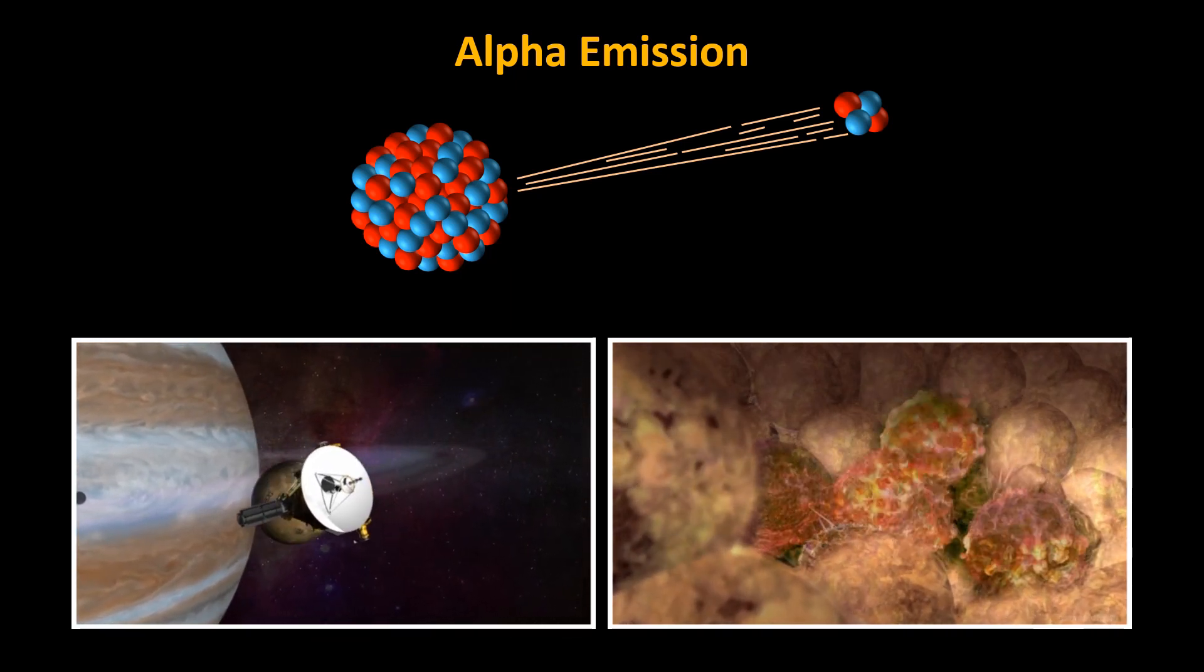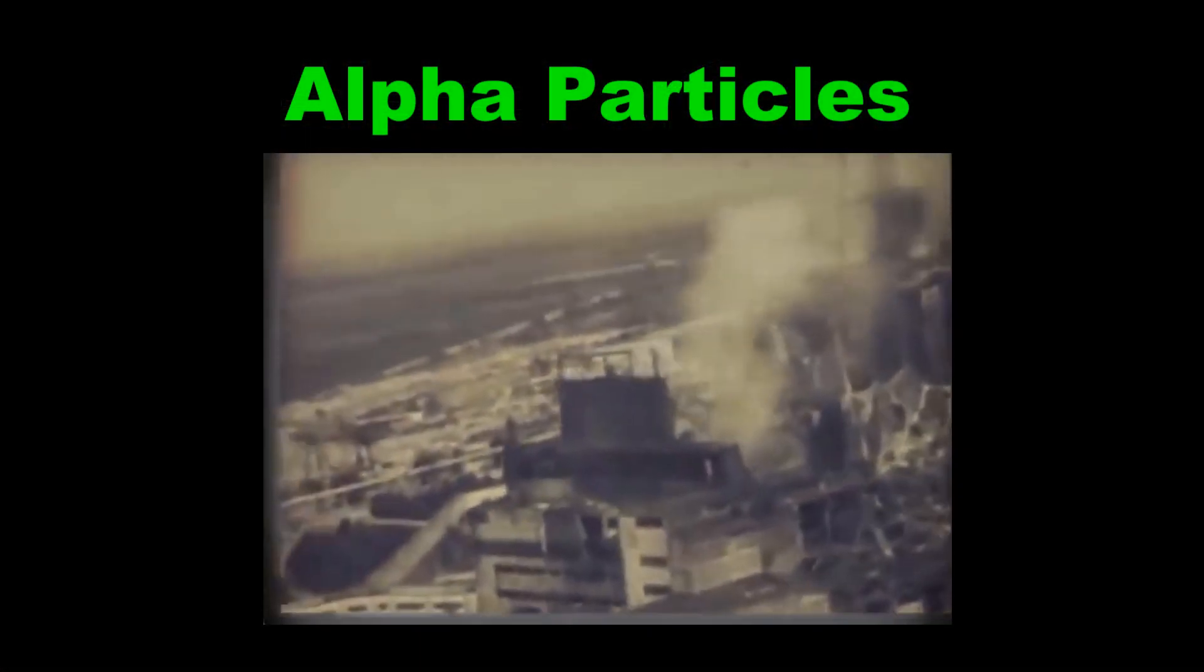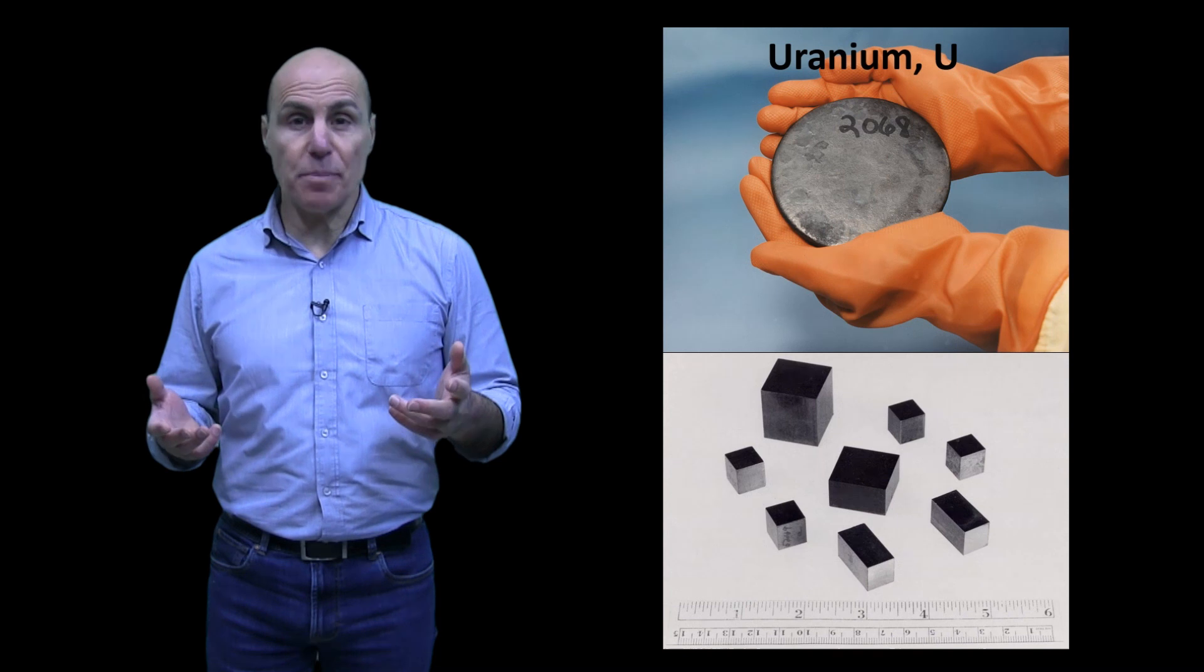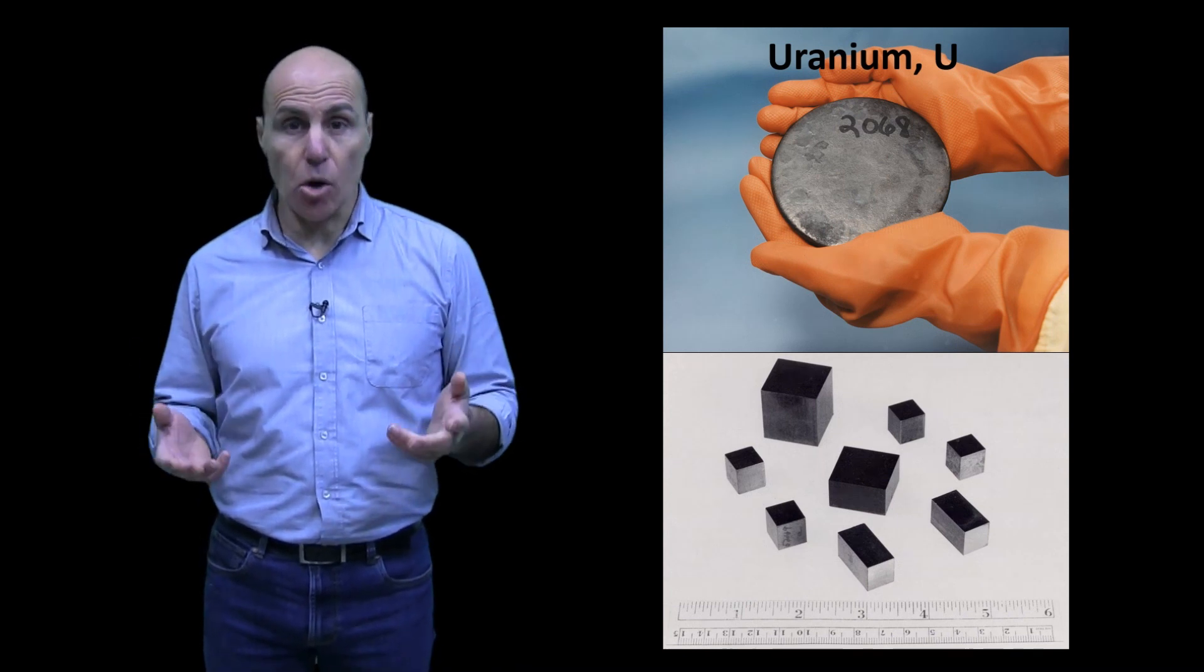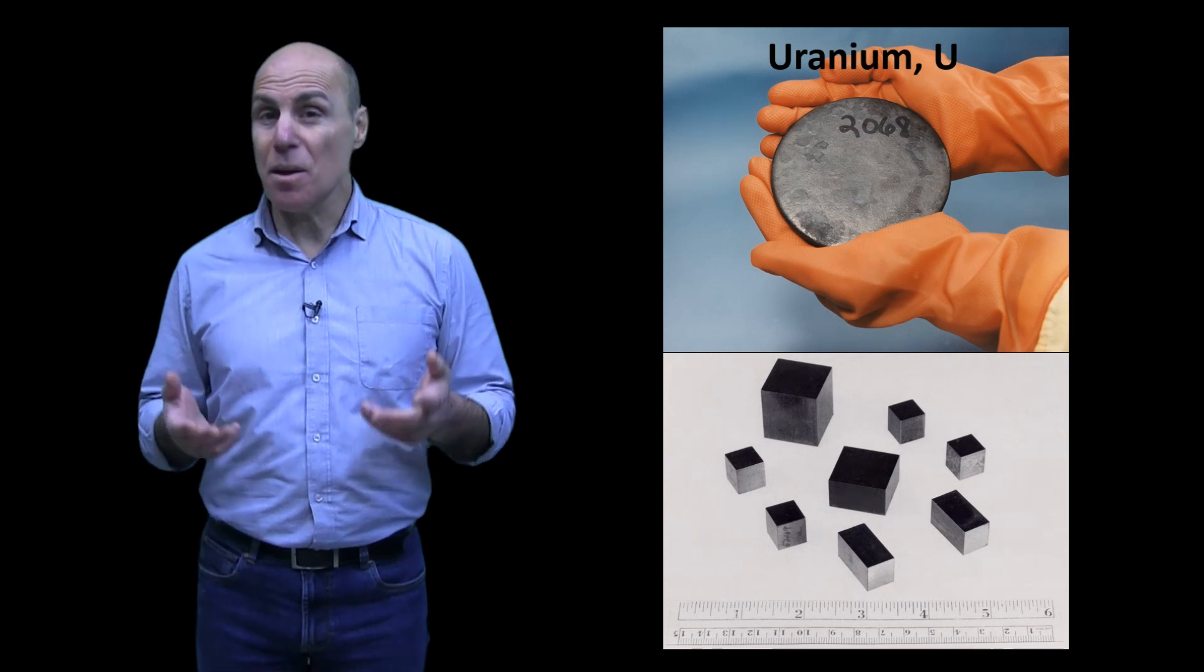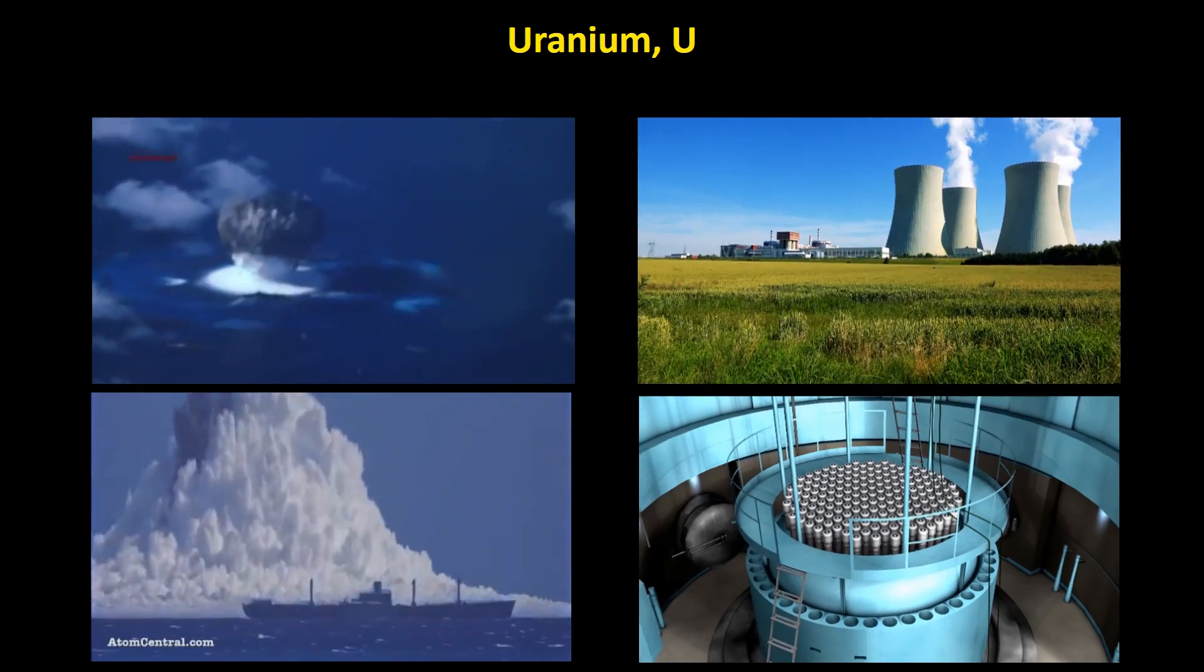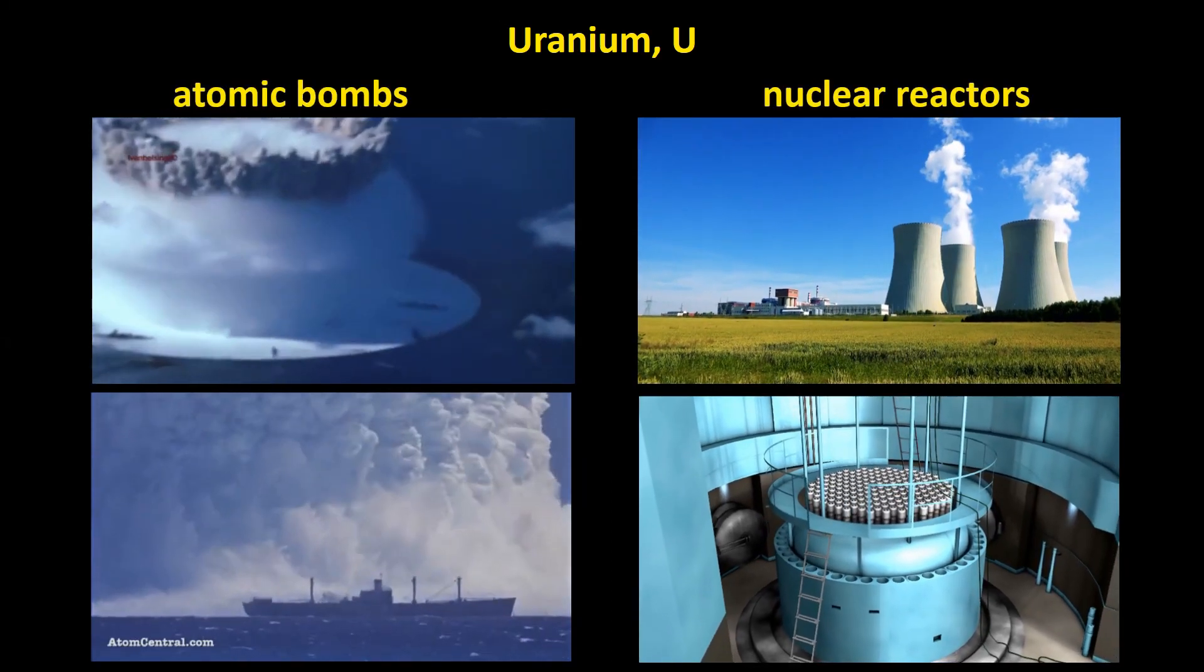Alpha radiation is made of alpha particles. So what are alpha particles? Let's take a look. These are two photos of uranium. Uranium makes up about three parts per million of the Earth's crust and is more abundant than gold, silver, and mercury, but slightly less abundant than lead. Uranium is used to produce atomic bombs and is one of the fuels used in nuclear reactors.